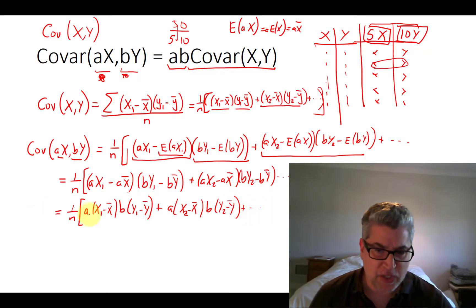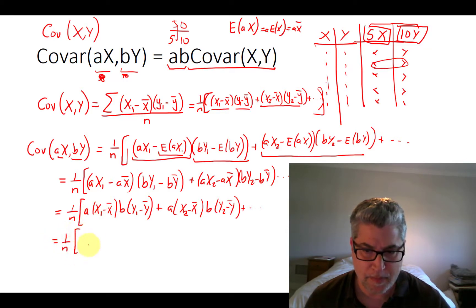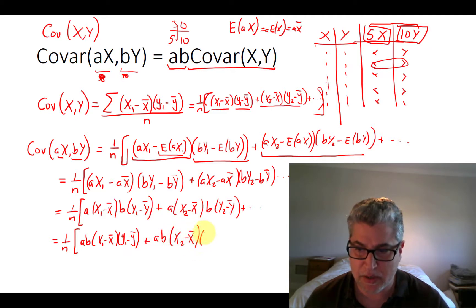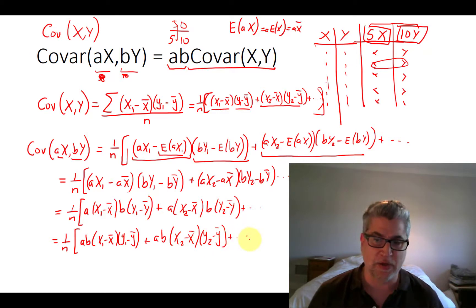And now all of these terms here are multiplied by each other. So the order doesn't matter. So we can pull out this B and just kind of put it over there. So we have A, B. X1 minus X bar. Y1 minus Y bar. Plus A, B. X2 minus X bar. Y2 minus Y bar. And so forth.